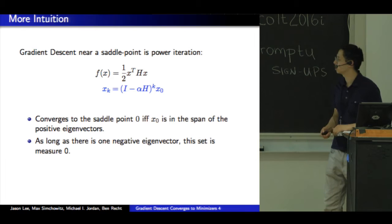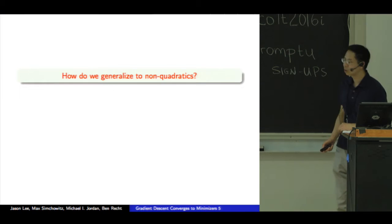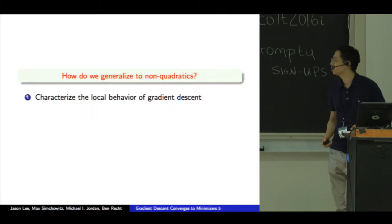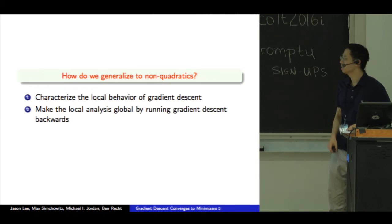So as long as there's one negative eigenvector and x0 is chosen at random, it will have some component along the negative eigenvector, so you would diverge. This basically completely characterizes the local picture, at least for a quadratic. So the question now is how do we generalize this to non-quadratics? And we're going to do this in two steps.